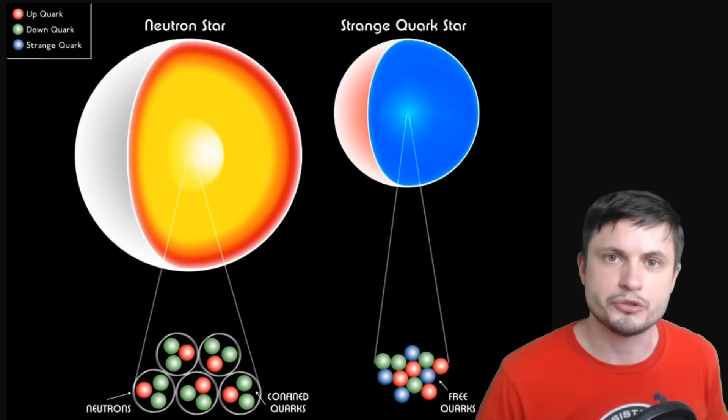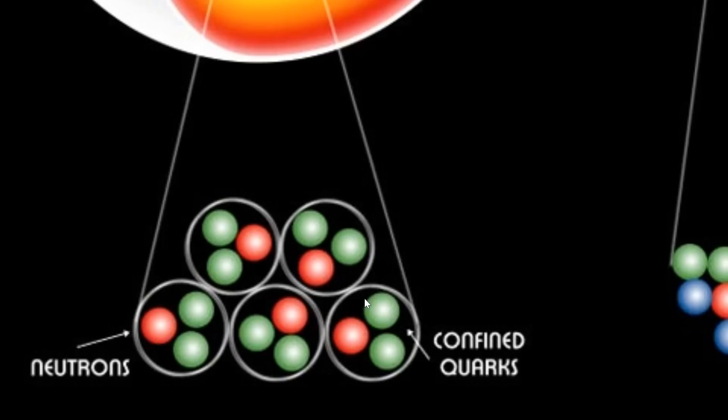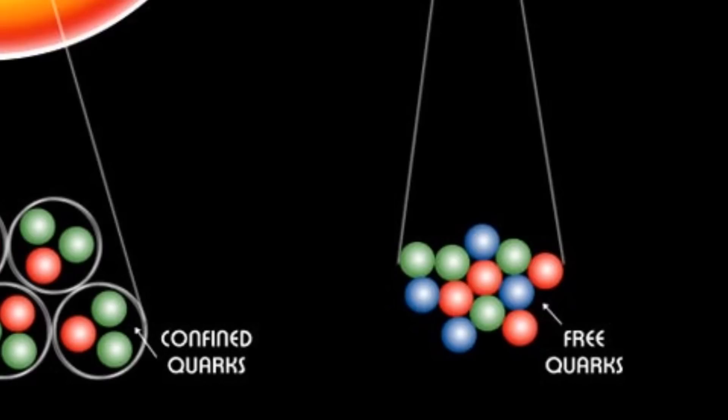Inside a neutron star, the pressures will reach such tremendous levels that at some point even the protons and the neutrons can start breaking apart and create just the quarks themselves. They essentially form a kind of a liquid-like formation known as quark matter.